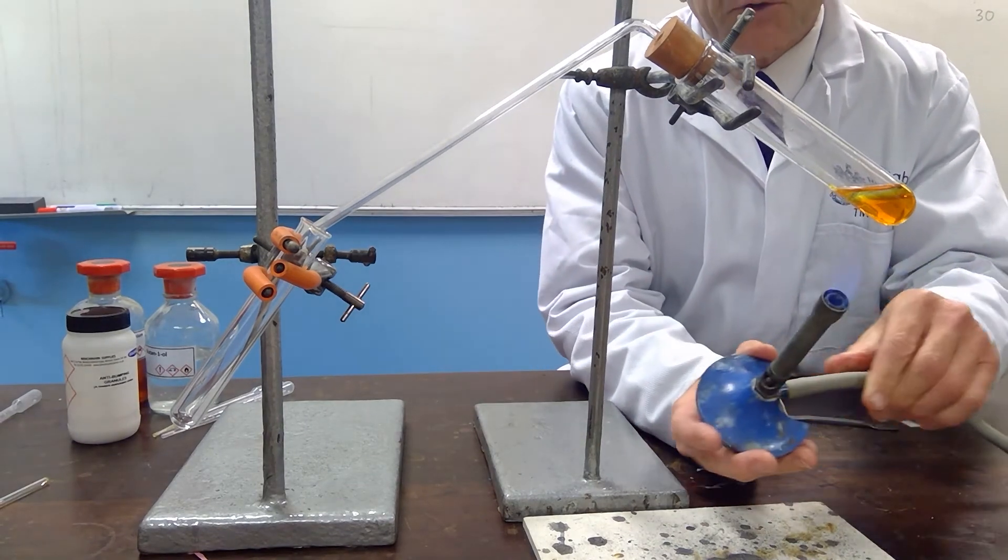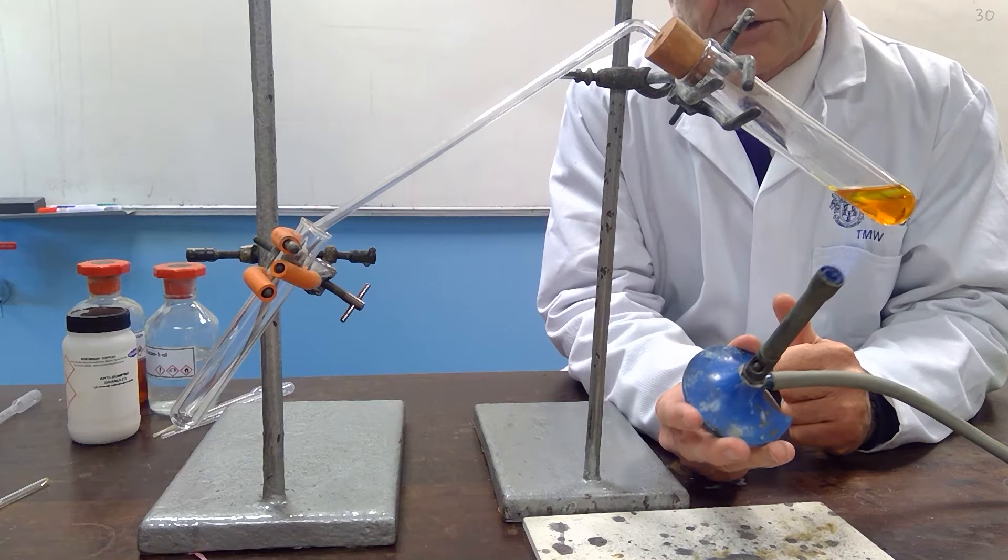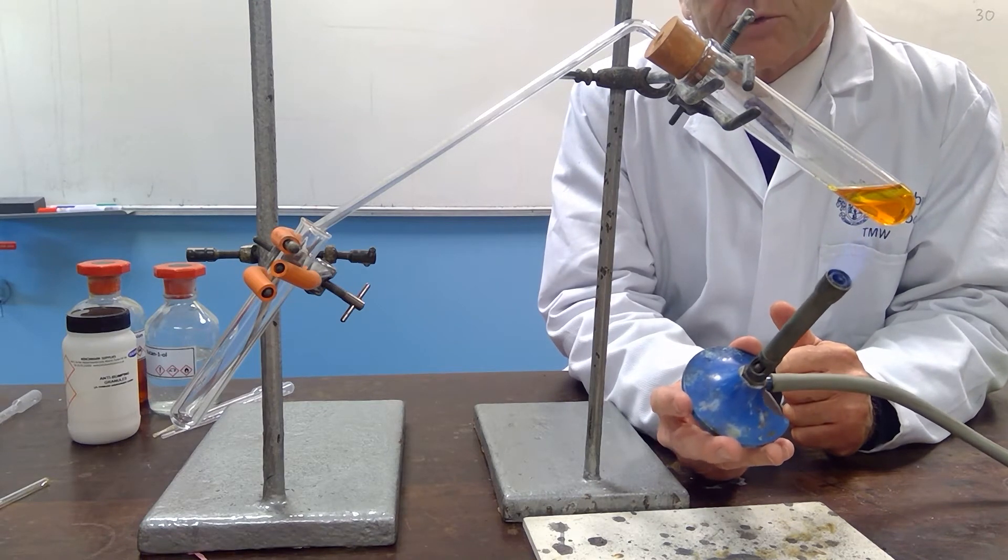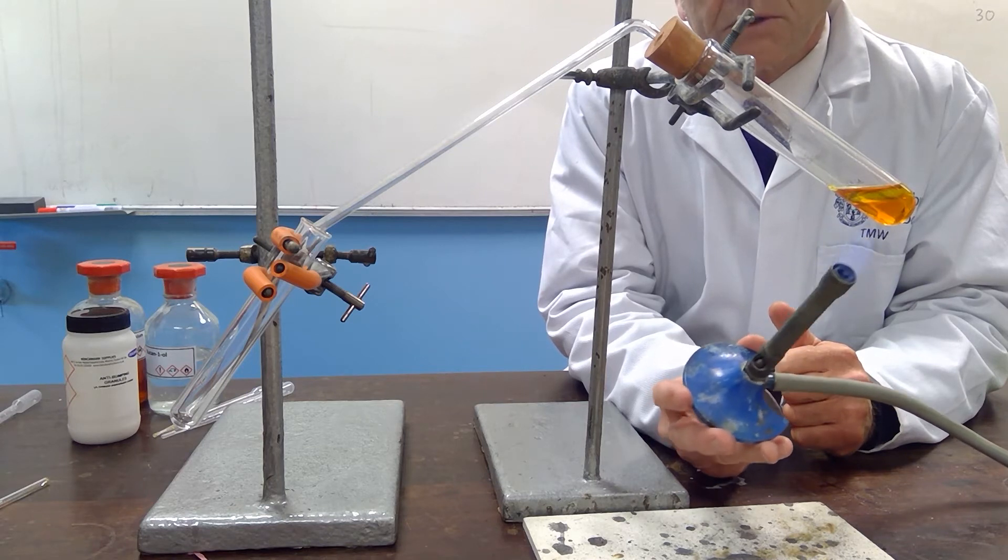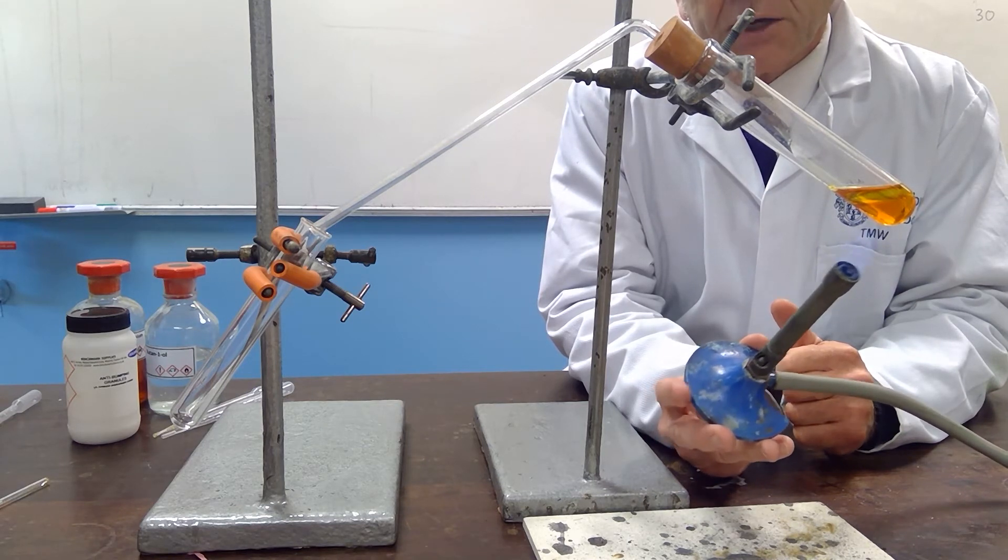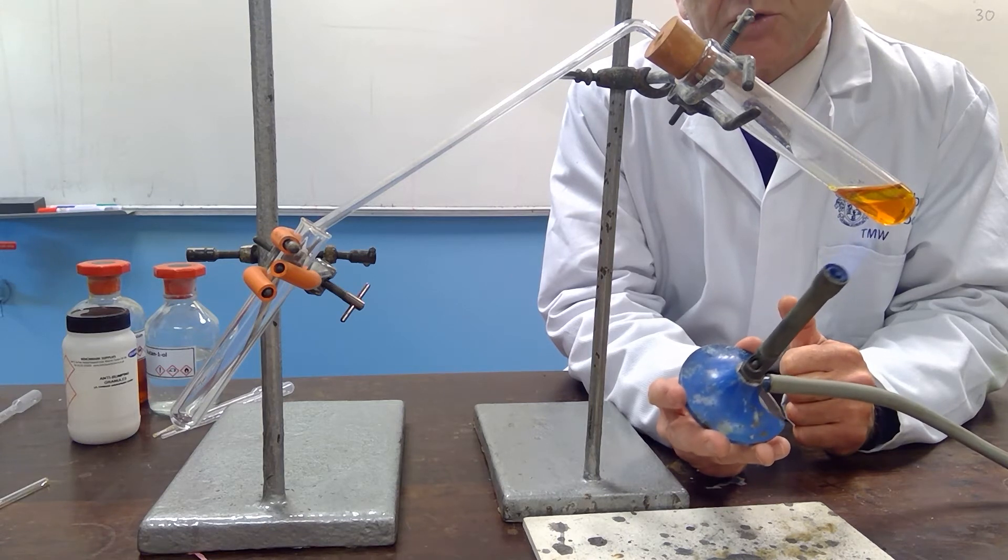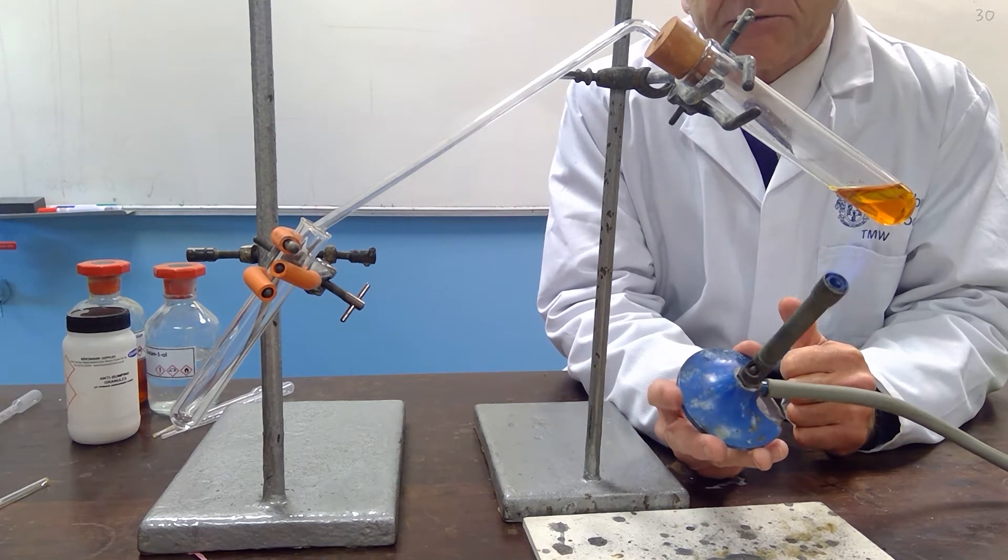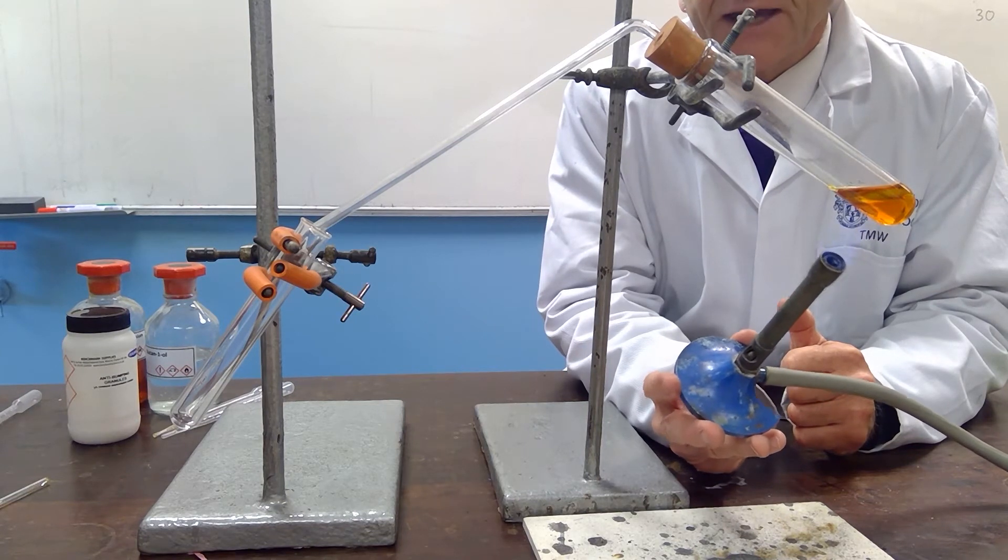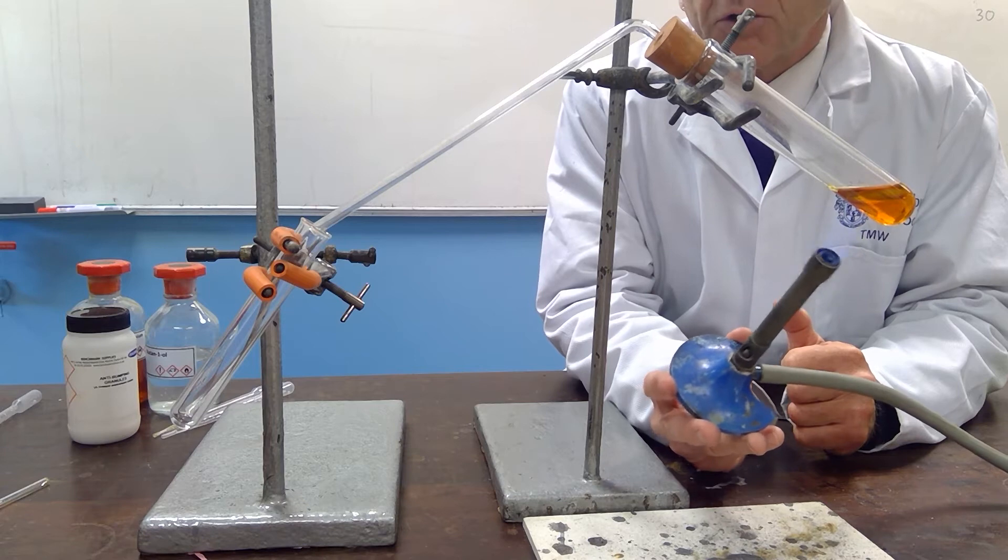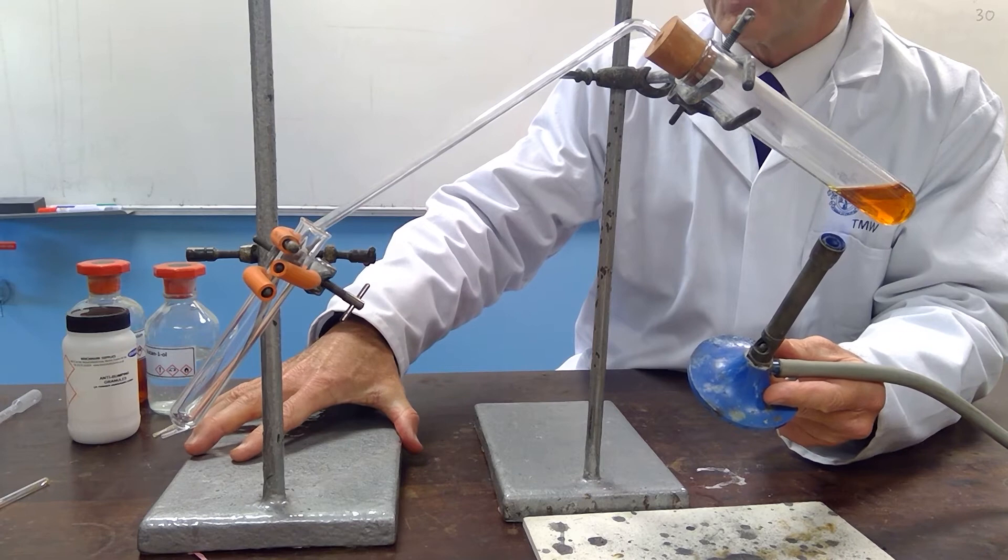So, careful heating will enable us to bring the product across. Once again, the orange dichromate will turn to green as this is warmed, and the butan-1-ol will be oxidized, first of all, to butanal. And because butanal has a relatively low boiling point, it will form a gas. That gas will pass across through the delivery tube, and we should be able to collect the distillate on the other side.